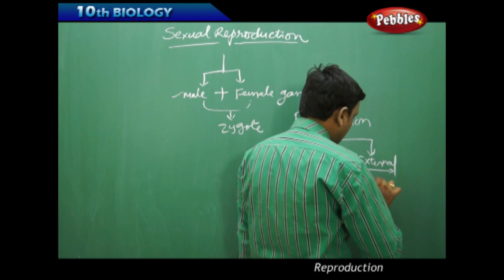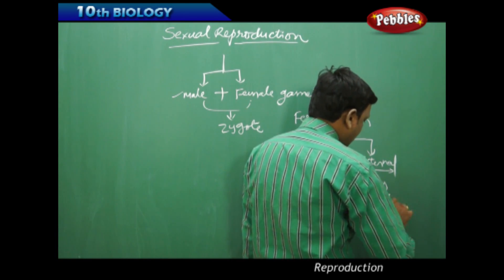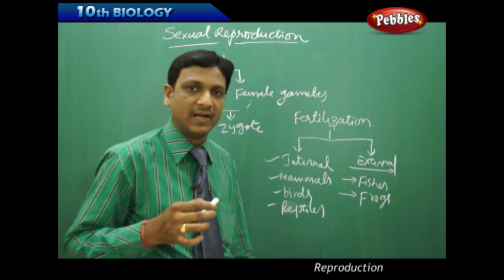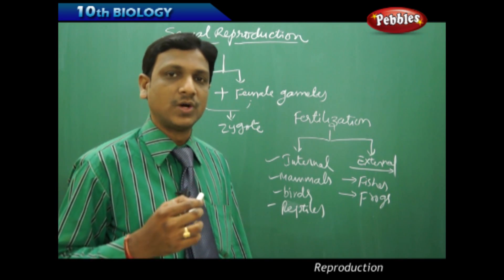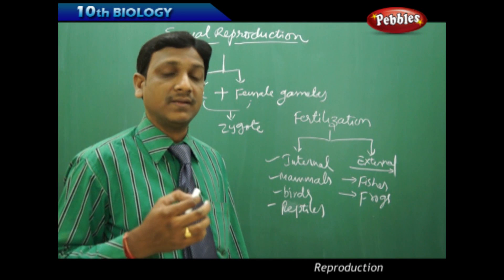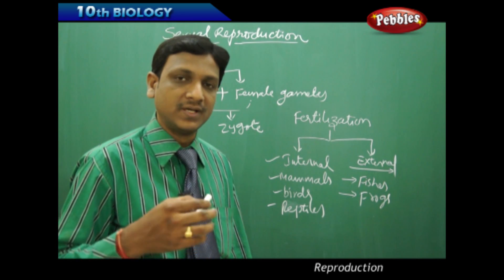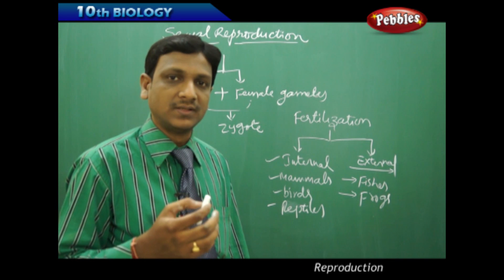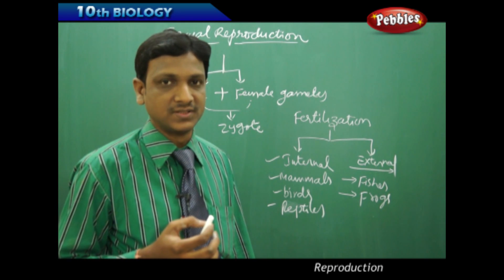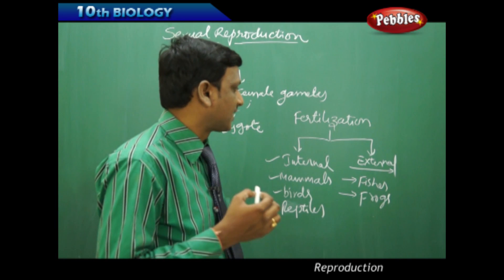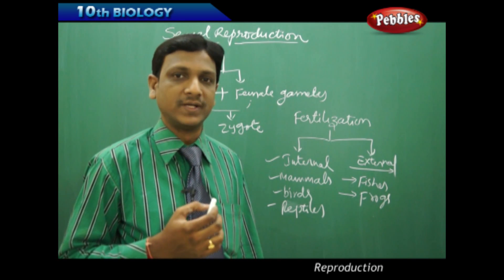In fishes and frogs, the female animal lays a large number of female gametes — eggs — into the water. Then the male organism releases sperm cells in large numbers into the water. In the water, the male gametes fuse with the female gametes and fertilization takes place. We call this external fertilization.